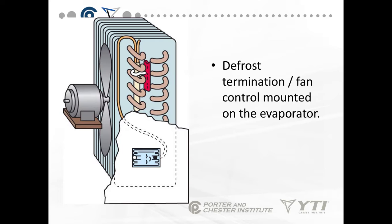To summarize: the defrost termination fan control terminates the defrost cycle once the ice has melted off the coil. It is an energy savings device that protects the compressors and protects the product. The fan delay portion ensures we're not blowing warm, moist air around a frozen environment, which would create snow and frost buildup on the product.